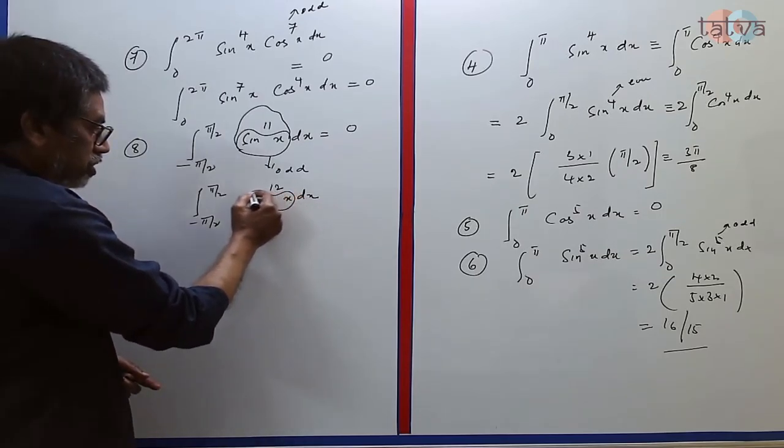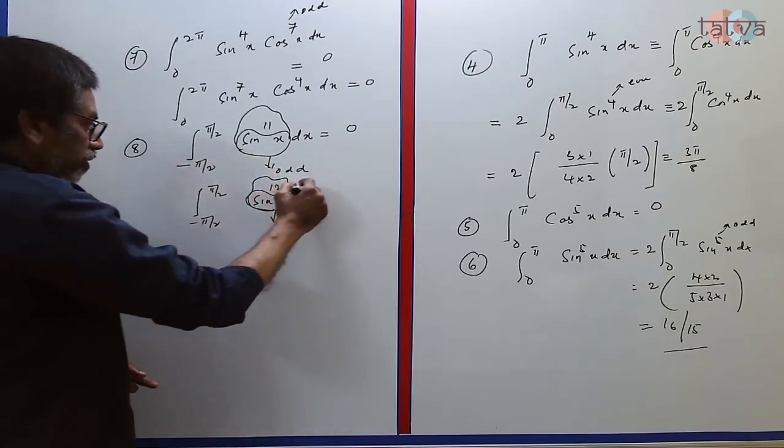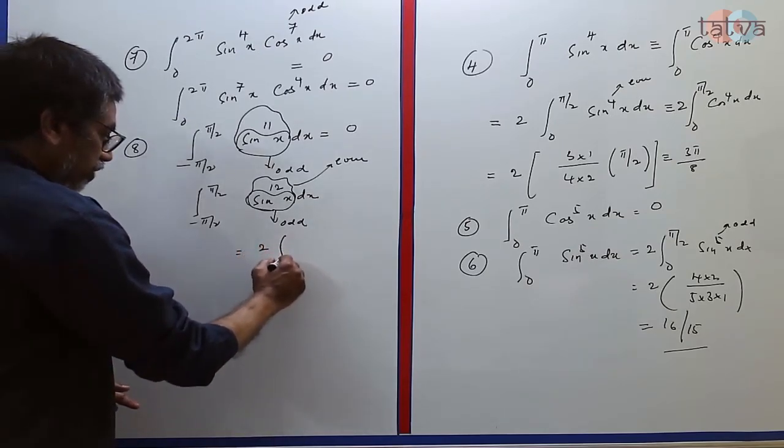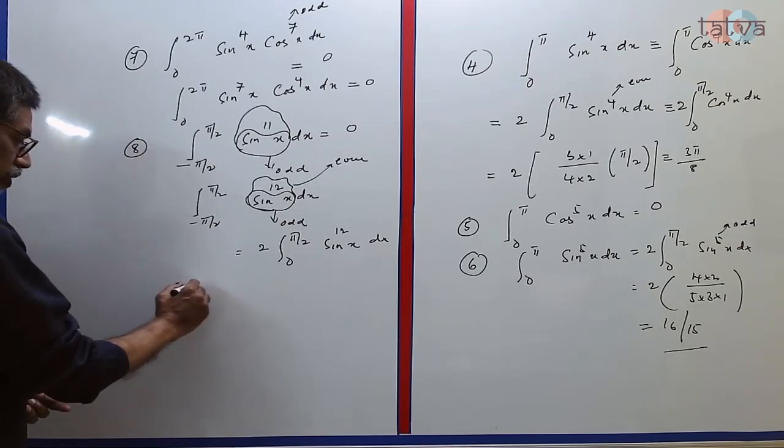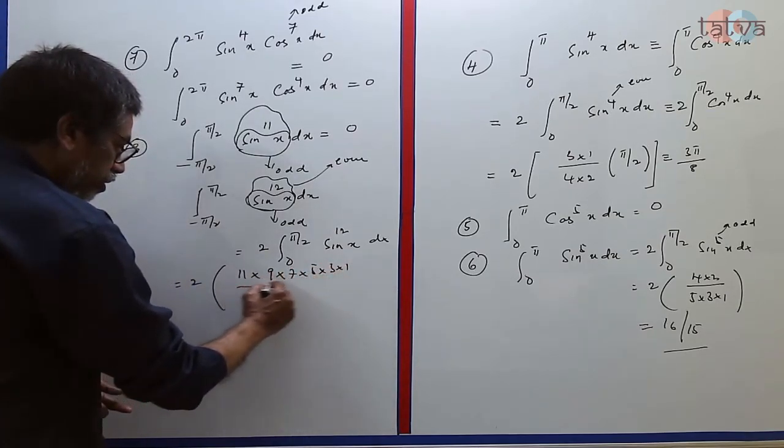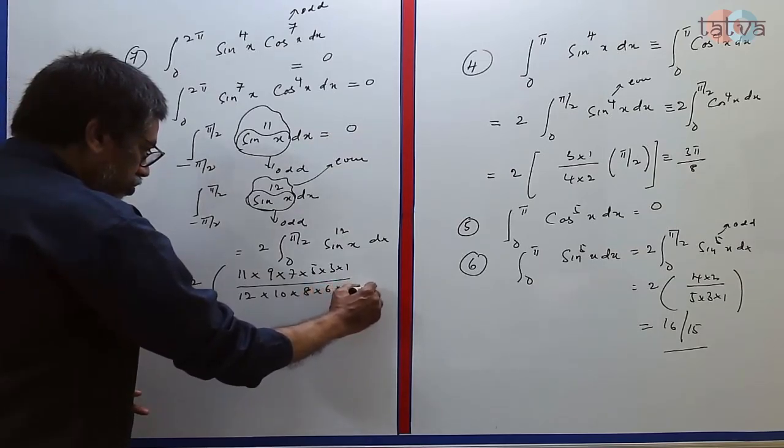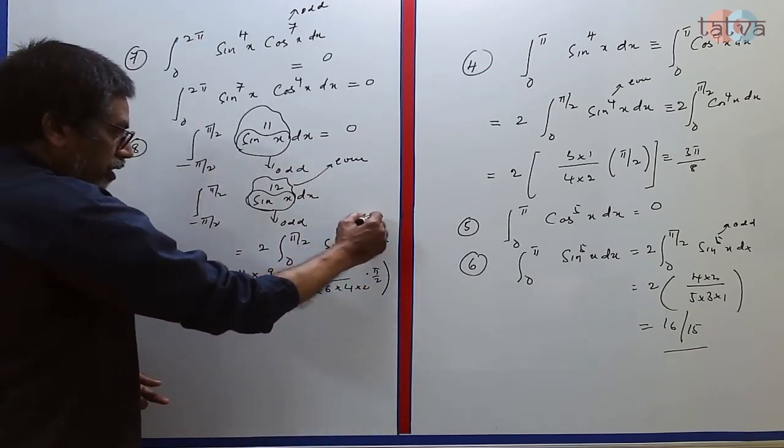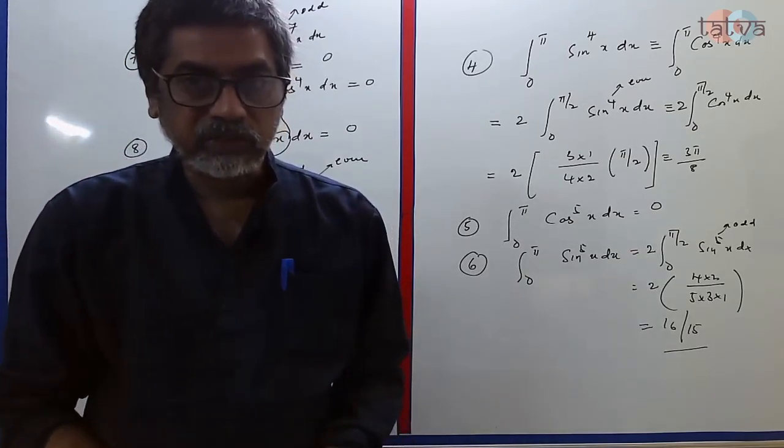But let us see what happens when you have -π/2 to π/2 sin^12 x dx. Now even though sin x is odd, sin x to the power of 12 is an even function. So you should understand the intricacies. This gets converted as 2 times 0 to π/2 sin^12 x dx. And the rest, the reduction rule will take care. 11, 9, 7, 5, 3, 1 upon 12, 10, 8, 6, 4, 2. Don't forget you should also multiply with π/2 because this is an even power.